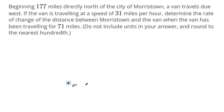Okay, there's a city. I'm going to label it M for Morristown. And then we're 177 miles north is where we're beginning, so I'm going to label this 177. The van travels due west, so it's going this way.